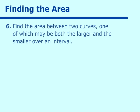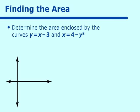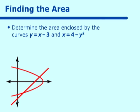Let's look at another one. Find the area between two curves, one of which may be both the larger and the smaller over an interval. So this is our problem: Determine the area enclosed by the curves. Y is equal to x minus 3 and x is equal to 4 minus y squared. If we sketched out the two curves, we will find that they look like this. The x minus 3 looks like this, and the 4 minus y squared actually comes around like this and goes to a point on the y axis. If we try to do this in x's, you see at this point we have the x is equal to 4 minus y squared both as the top curve and the bottom curve. We can do it that way, it's a little bit more involved. But if we look at it from the y perspective, we see that our top curve is always the 4 minus y squared and our bottom curve is always the x minus 3. So it would be a lot easier to set it up this way.